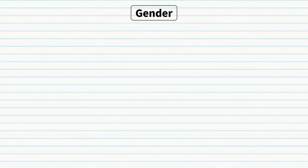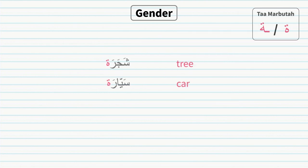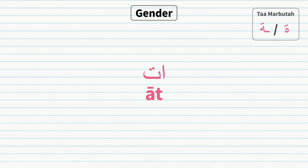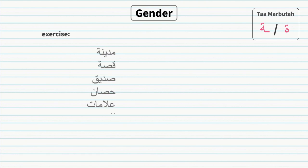Gender in Arabic: every noun is either masculine or feminine. A good way to learn noun gender is to recognize feminine words first. Certain obvious nouns related to women are feminine — like 'mother', 'girl', or female names like Mariam. The ta marbuta is probably the easiest way to recognize feminine words, as the vast majority of feminine words are identified by it. Exercise: can you spot the feminine words? Pause the video if you need more time.